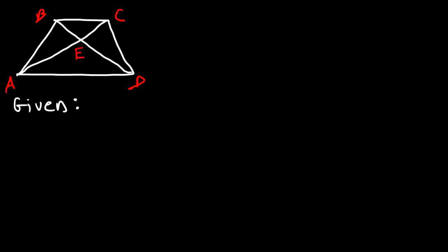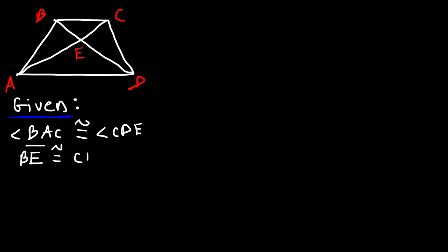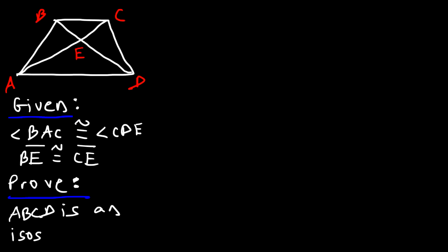Let's call the points A, B, C, D, and E. The given information is that angle BAC is congruent to angle CDE, and also that segment BE is congruent to segment CE. The goal is to prove that quadrilateral ABCD is an isosceles trapezoid. Let's work on this example using a two-column proof.